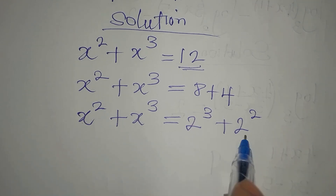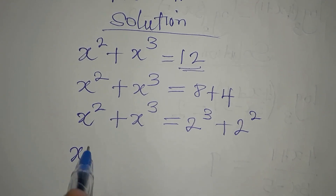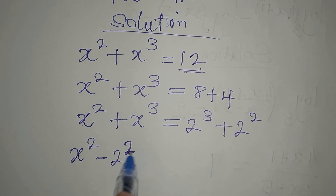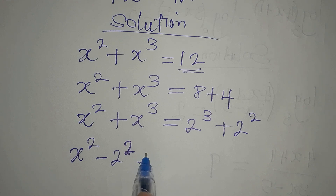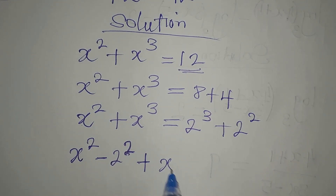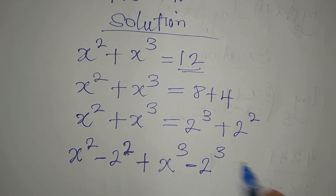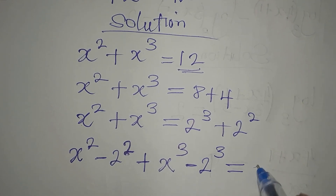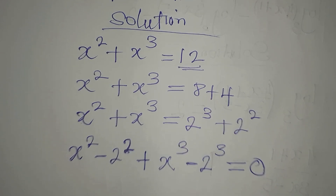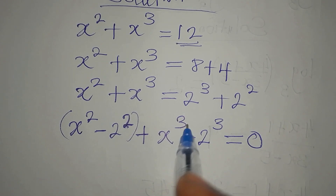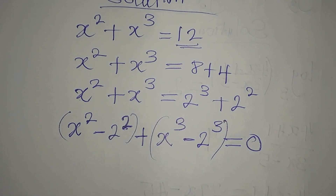We regroup this together, so we have x squared minus 2 squared, plus x cubed minus 2 to the power of 3. There is nothing on the right, so we equate everything to zero.